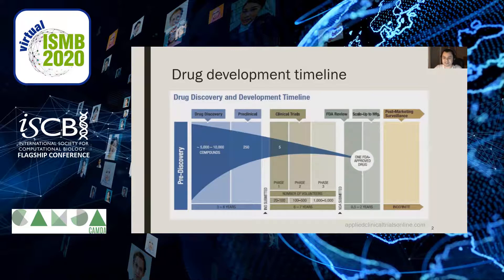As you're probably well aware, the drug development timeline is a long one. Drugs often tend to fail later on in the process. If there was a way for us to computationally determine the safety of a drug much earlier on in the timeline, you could save a lot of time and money. And so this CAMDA challenge tackles that from the perspective of drug-induced liver injury, or more commonly known as DILI.